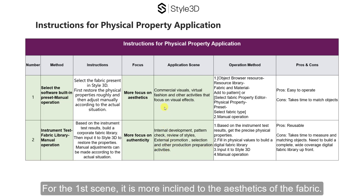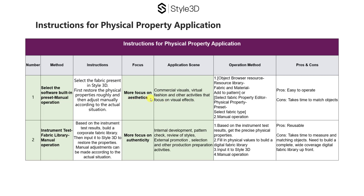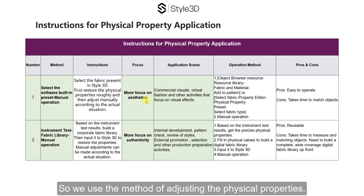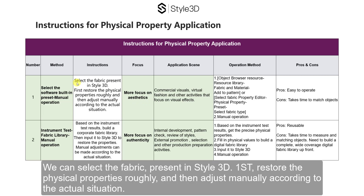For the first scene, it is more inclined to the aesthetics of the fabric. So we use the method of adjusting the physical properties — we can select the fabric preset in Style 3D. First, restore the physical properties roughly and then adjust manually according to the actual situation.